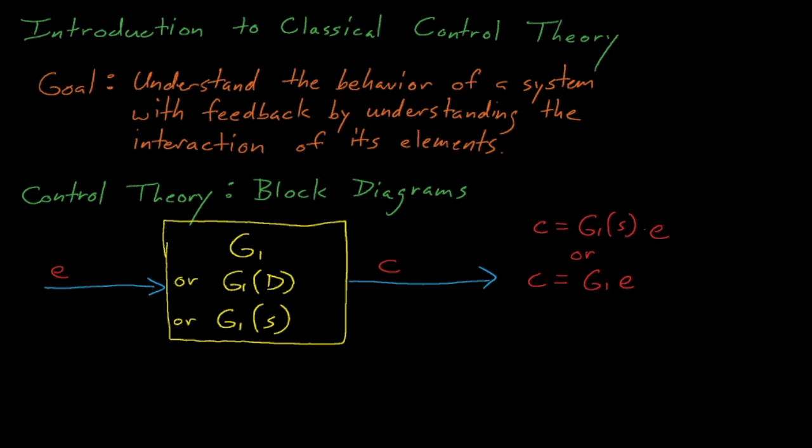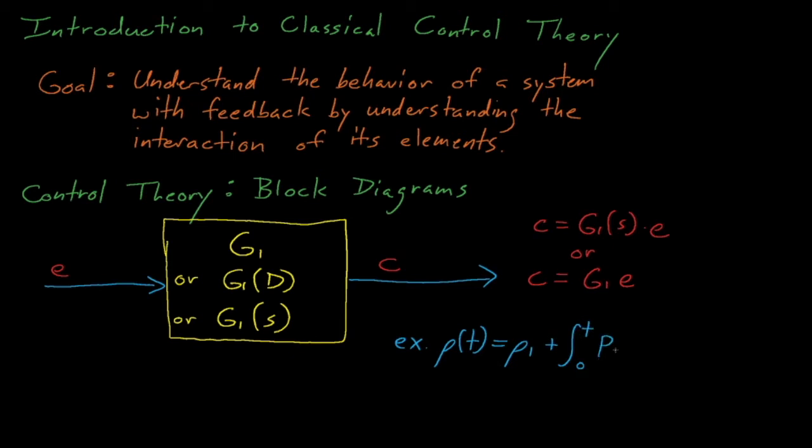In the final kinetics lecture, we assumed that the change in reactivity during a prompt supercritical transient was dictated by the integral of the power, or the amount of energy released during the transient. In this case, the power integral is a feedback control element that shows how our input signal, the power, introduces a change in an output signal, the reactivity.